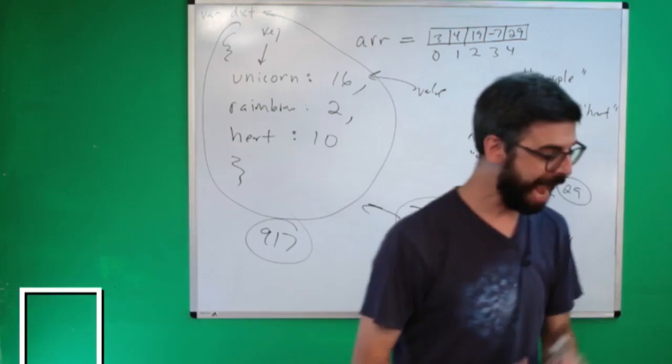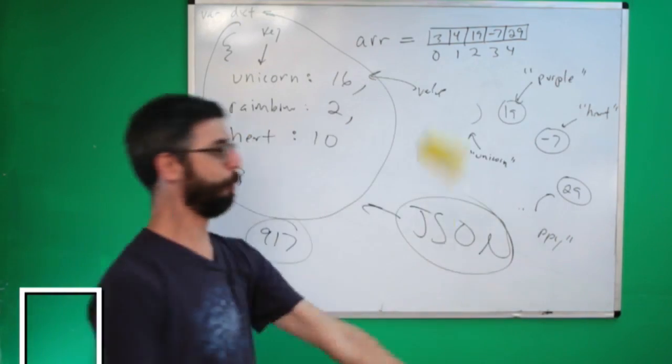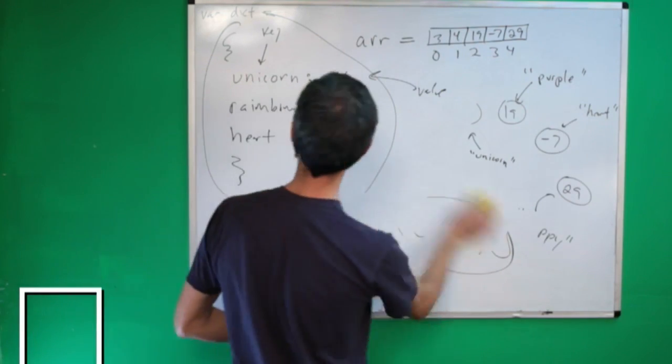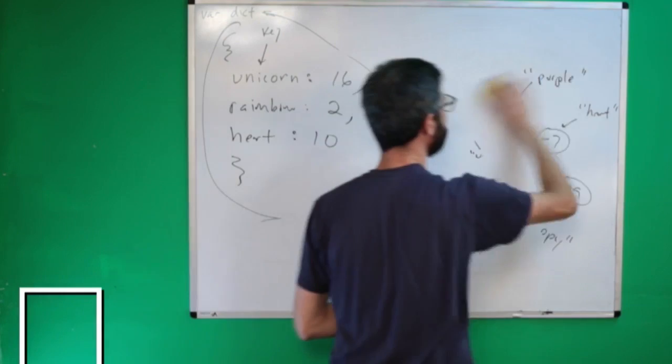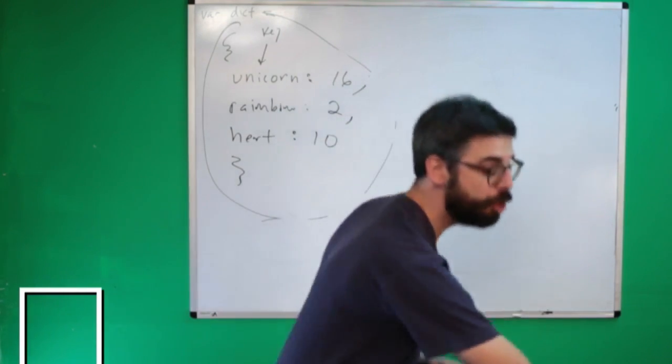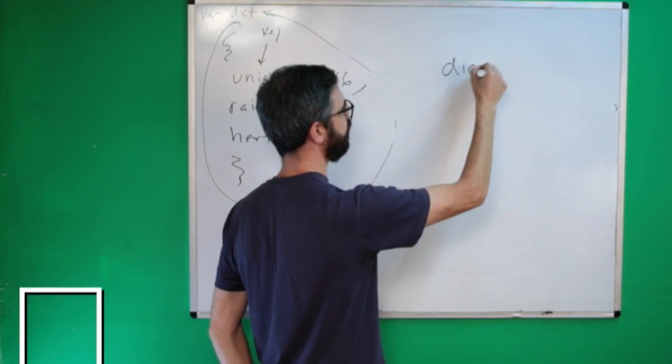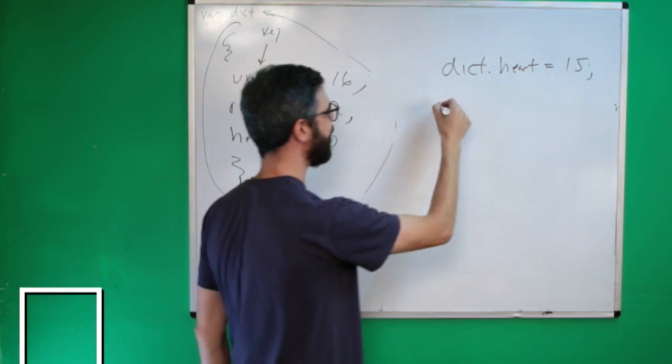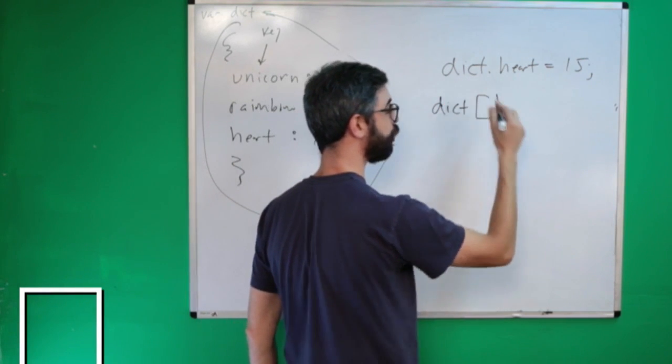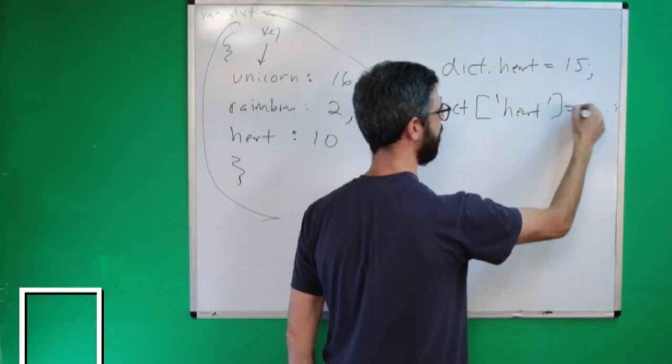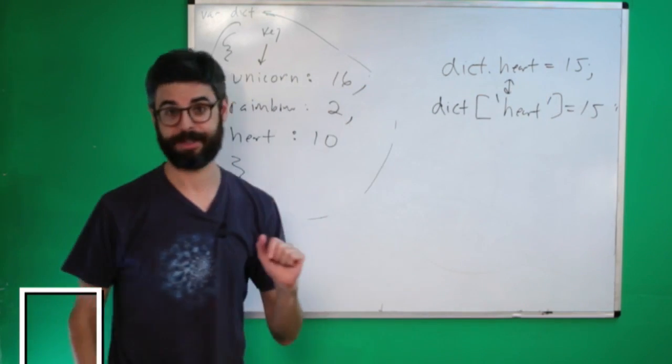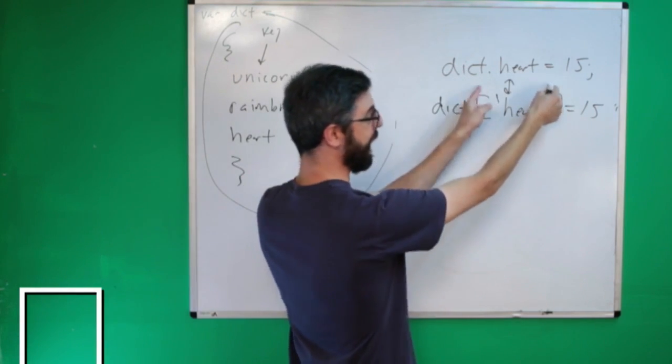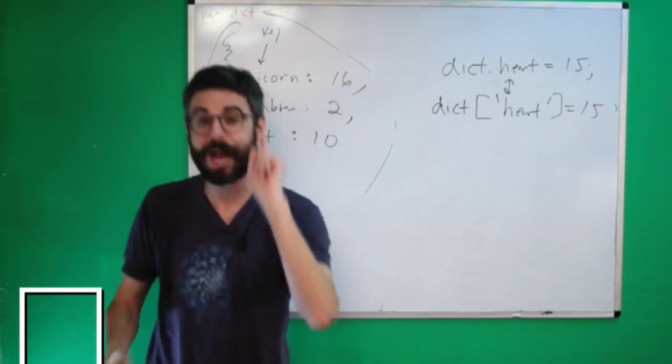By the way, I'm going to do some like crazy juggling stuff for no reason. Okay. Is that you can access the properties of an object in two ways. I can say dictionary.heart equals 15 or I can say dictionary string heart equals 15. These are equivalent.